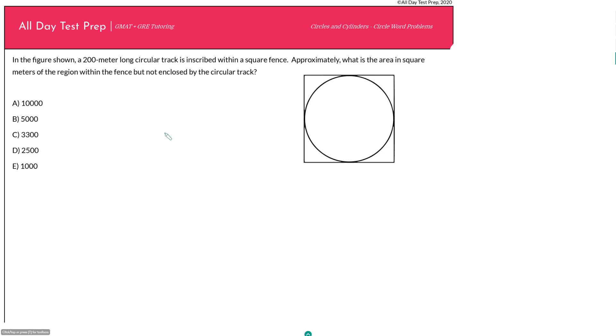Let's do another word problem involving circles. The GMAT loves to ask geometry questions using real world situations and shapes. This question says: in the figure shown, a 200 meter long circular track is inscribed within a square fence. Approximately what is the area in square meters of the region within the fence but not enclosed by the circular track?